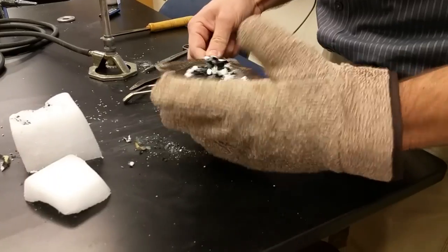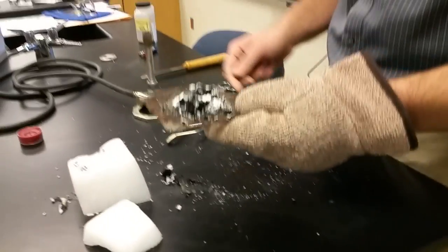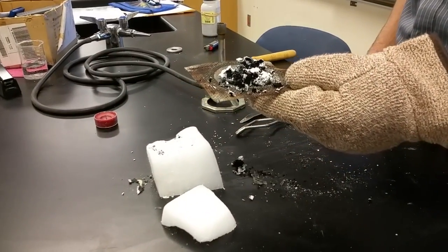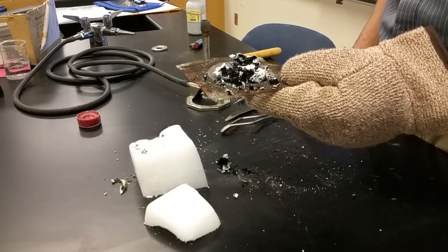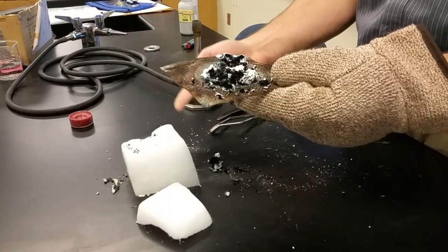Okay. So what's the black stuff? Carbon. Where'd the carbon come from? The carbon dioxide. From the dry ice. From the carbon dioxide, which is solid.